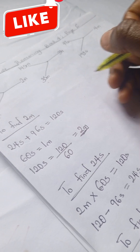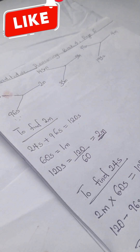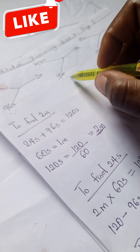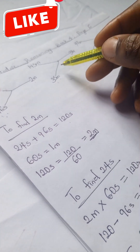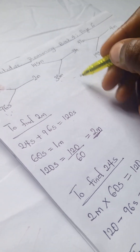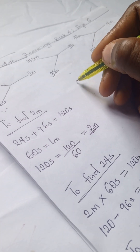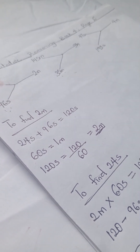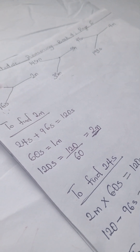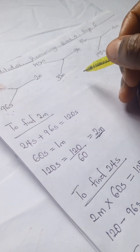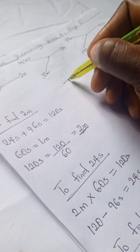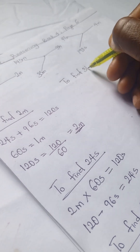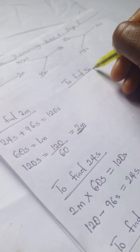We're going to be working on this next one — it looks a little bit different. Here, 'h' signifies hours, 's' signifies seconds, and 'm' signifies minutes. So to find 3 hours, or 3h...